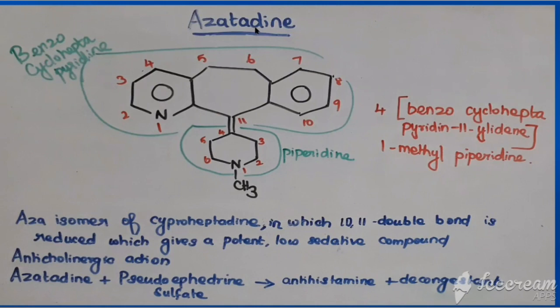This is the sixth class of antihistamines. Here first we are going to see azatadine, that is available as a maleate salt. Look at the structure of azatadine. Here piperidine is the parent. Piperidine is pyridine without any double bond — if it is not having any bond, that can be called as piperidine.